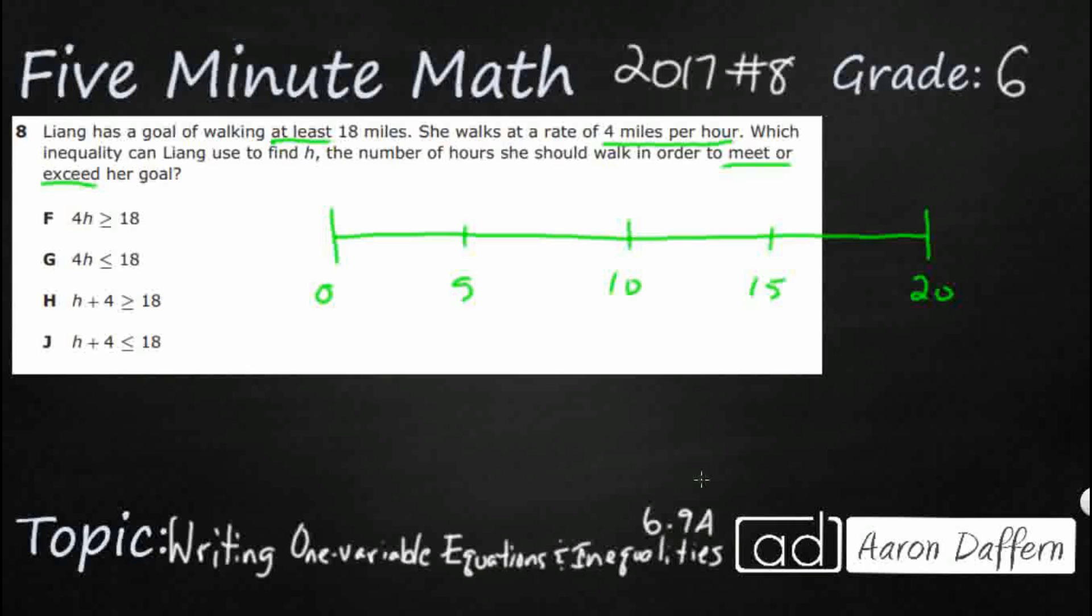So let's say her goal is to start from 0 and walk to at least 18. So I'm going to put a little closed dot right there, thinking that is her goal, 18 miles.